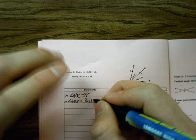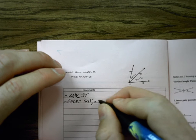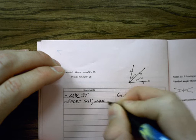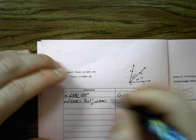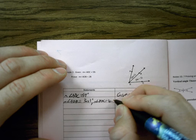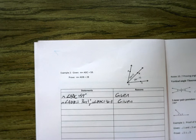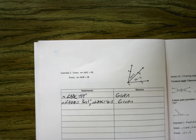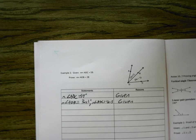I also know, semicolon, bless you, the measure of BDC. That is equal to 4X minus 5. This is actually given to us. This is not made up. I'm not pulling out of thin air or a magic hat.